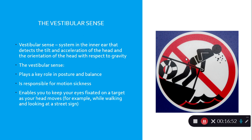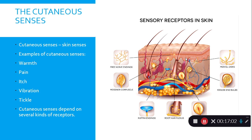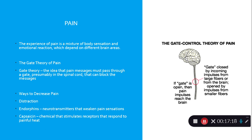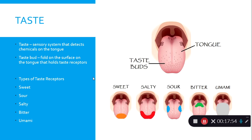The cutaneous senses are your skin senses — warmth, pain, itch, vibration, and tickle — and depend on several kinds of receptors. Pain is a mixture of body sensation and emotional reaction, depending on different brain areas. The gate theory of pain holds that pain messages must pass through a gate, presumably in the spinal cord, that can block messages. Ways to decrease pain include distraction, endorphins, and capsaicin chemicals that stimulate receptors responding to painful heat.